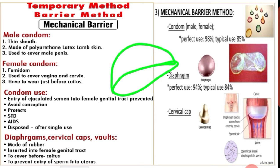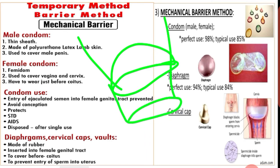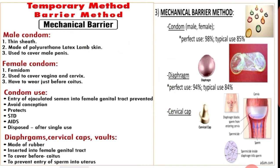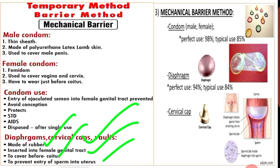The vault cap is a plastic cap with a thin rim, meant to fit over the vaginal vault to cover the cervix. Diaphragm, cervical cap, and vault are all made of rubber or plastic, inserted into the female genital tract before sexual activity to prevent the entry of sperm into the uterus. These are the mechanical barrier methods.